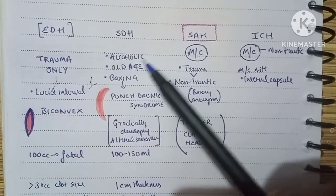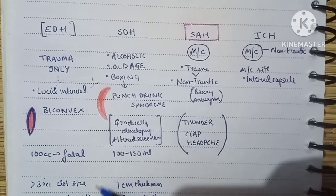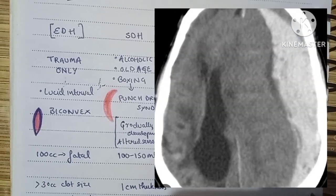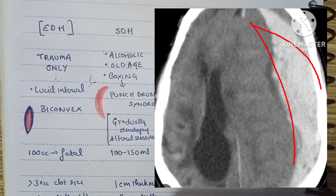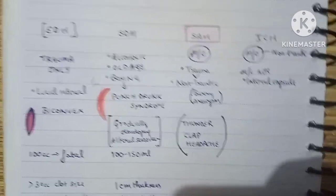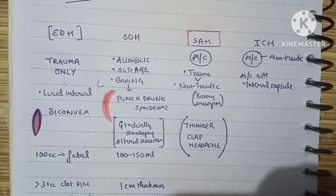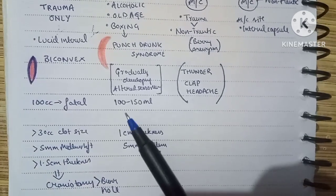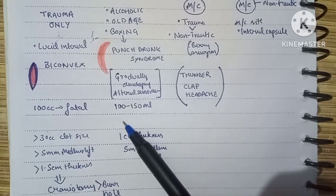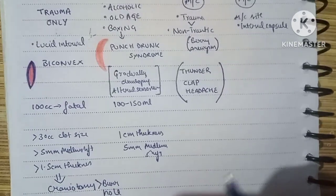Subdural hemorrhage is seen in alcoholics, the elderly, or in boxers — the latter known as punch drunk syndrome. On CT, we see a concave-convex hematoma. After the trauma there is gradually developing altered sensorium over weeks, so an elderly person who suffered a trauma may develop altered sensorium after a few weeks. A fatal volume is 100 to 150 ml. The indications for surgery are 1 cm thickness of the hematoma and 5 mm of midline shift.